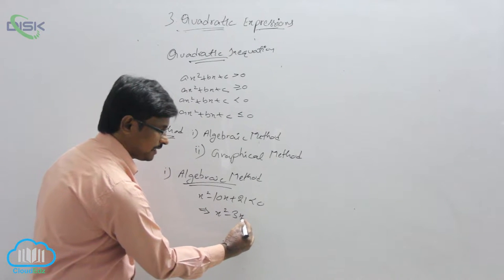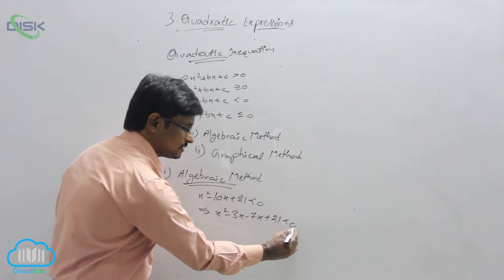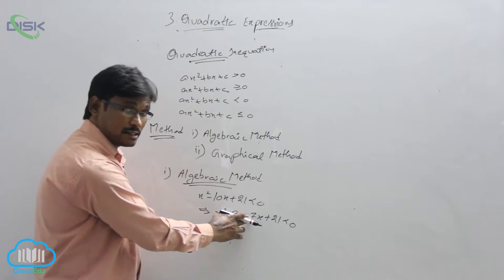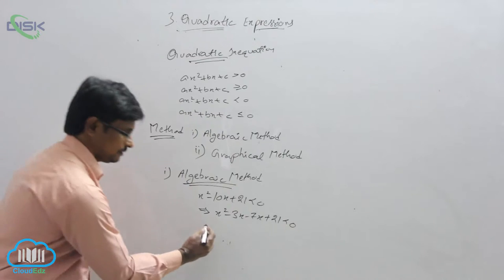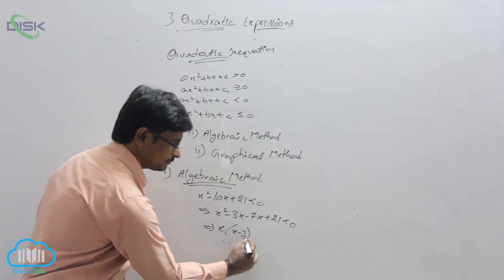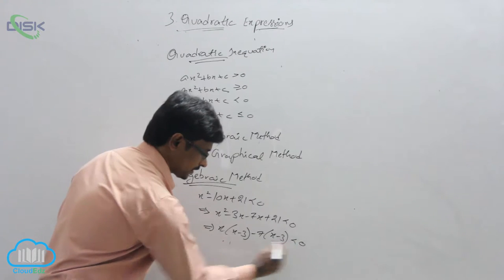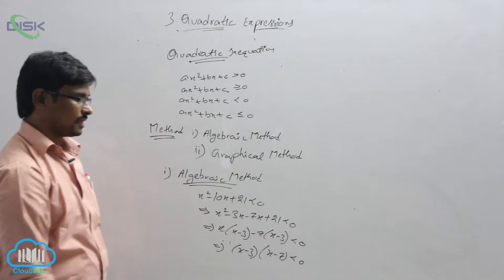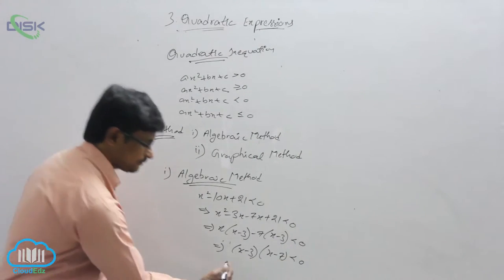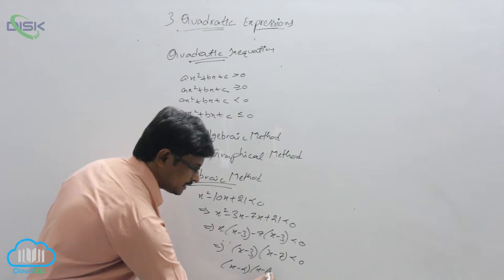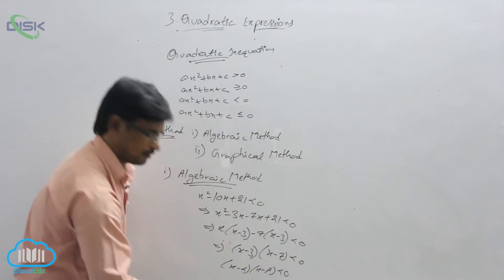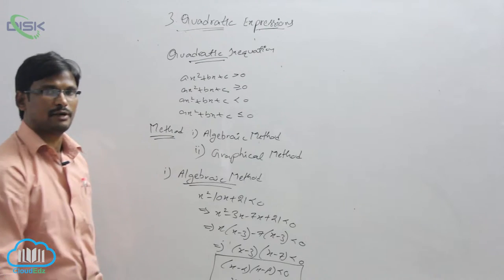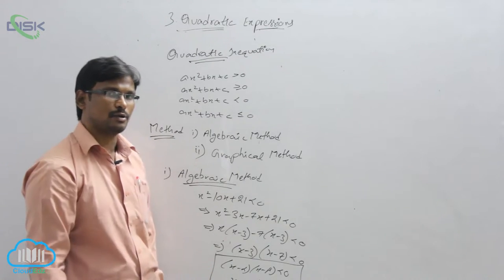The factors will be: x² minus 10x plus 21 splits as minus 3x minus 7x plus 21. Taking x common and minus 7 common, we get (x minus 3)(x minus 7) less than 0. We know that if it is in the form (x minus α)(x minus β) less than 0, the solution is x belongs to (α, β).